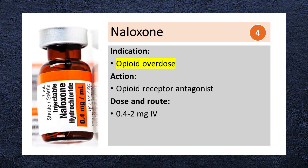Naloxone is an opioid receptor antagonist used to reverse the effects of opioid overdose, including respiratory depression and sedation. It is administered in doses of 0.4-2 mg intranasal, intramuscular, or intravenous depending on the situation, and can be repeated every 2-3 minutes if needed.